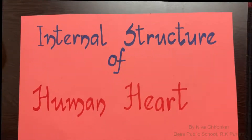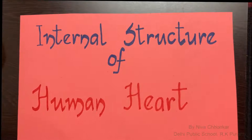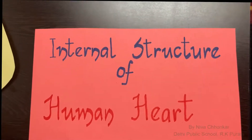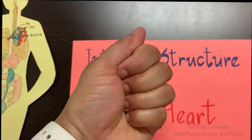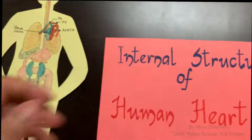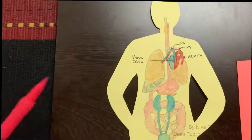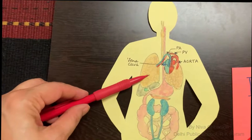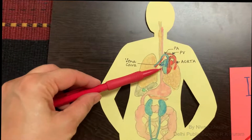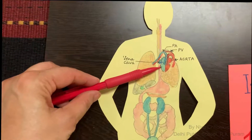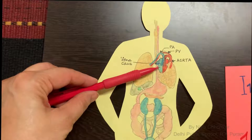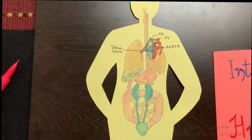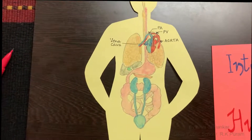Let's understand the internal structure of the human heart. The size of the human heart can be compared to one's closed fist. But where is the heart located in the human body? It is located in between the lungs, in the middle of the chest, behind and slightly left to your breastbone.